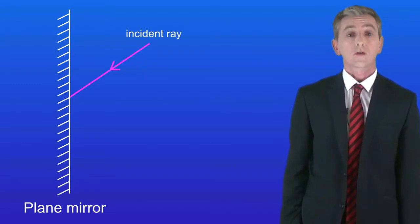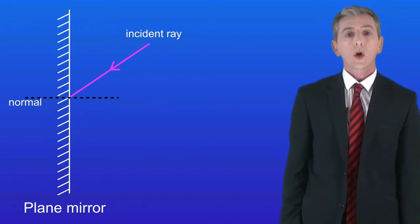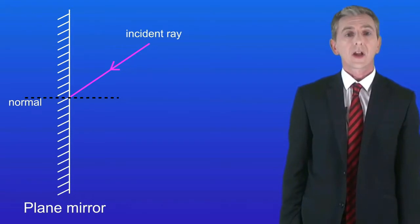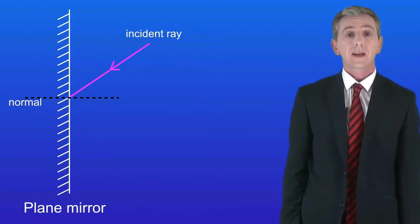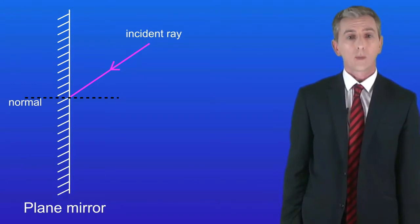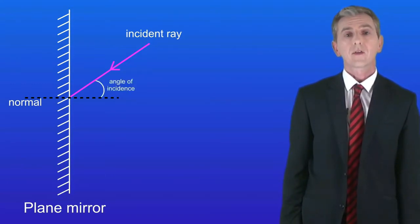The first thing we have to do is draw a line at right angles to the mirror. We call this the normal, and we use it to work out angles. Remember that we don't actually see the normal — it's just an imaginary line that helps us to draw a ray diagram. First we measure the angle between the incident ray and the normal, and we call this the angle of incidence.